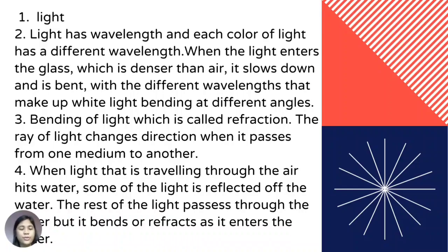These are the correct answers. Number one: light. Number two: light has wavelengths, and each color of light has a different wavelength. When light enters the glass, which is denser than air, it slows down and is bent, with the different wavelengths that make up white light bending at different angles. Number three: bending of light, which is called refraction — the ray of light changes direction when it passes through one medium to another. Number four: when light traveling through air hits water, some of the light is reflected off the water, and the rest passes through the water but bends or refracts as it enters the water.